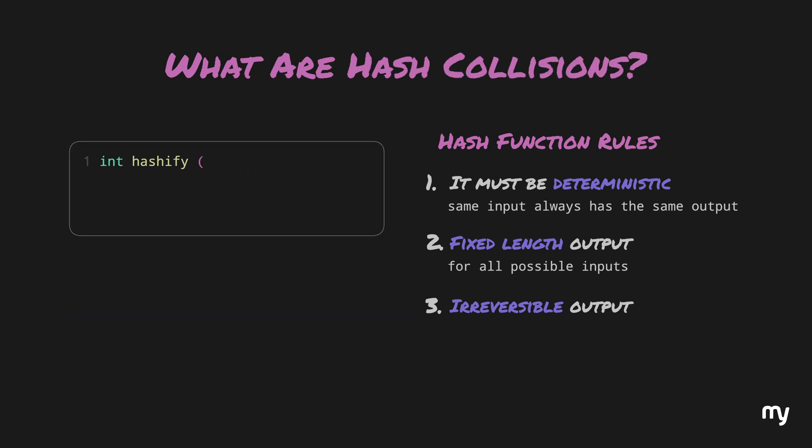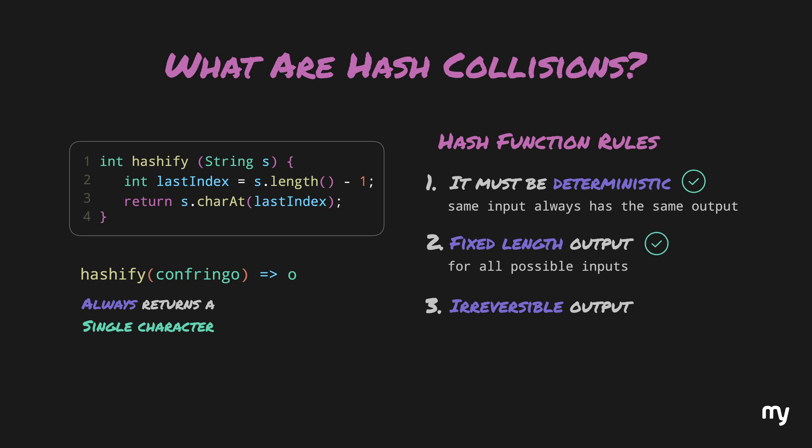Now, let's try to create another hash function which satisfies all three rules. The job of this function is to return the last character of a string. So, if we pass confringo to the function, it will always return lowercase o, which means rule number 1 is satisfied. Since this will always return a single character, no matter how large the input is, it satisfies rule number 2 as well. And finally, it is impossible to construct a string back from a single character. So, rule number 3 is also satisfied.